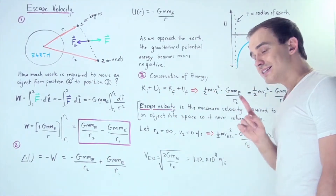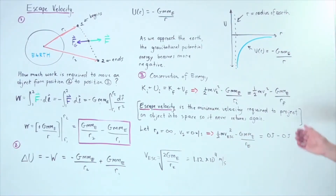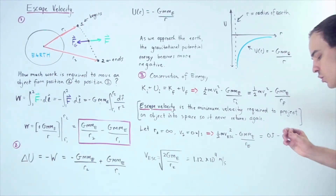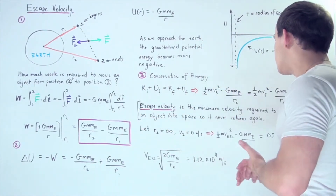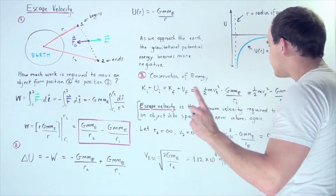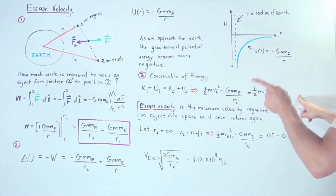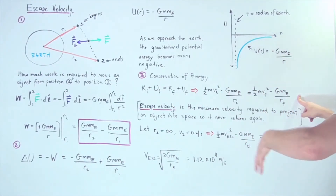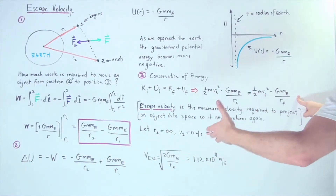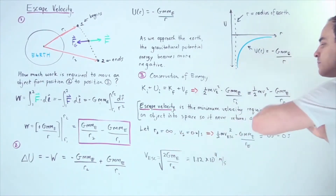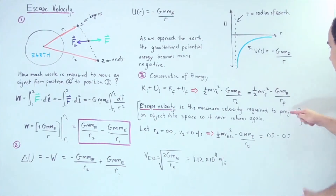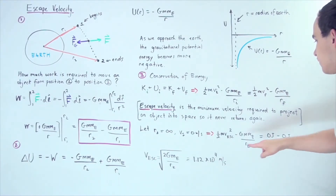Escape velocity is simply the minimum velocity required to project any object into space so that it never returns. To find escape velocity, we note that the final velocity of the object will be zero, and the final distance is assumed to be infinity — infinitely far away. If the final distance is infinity, the final gravitational PE term becomes zero, and if the final velocity is zero, the final kinetic energy term also becomes zero.